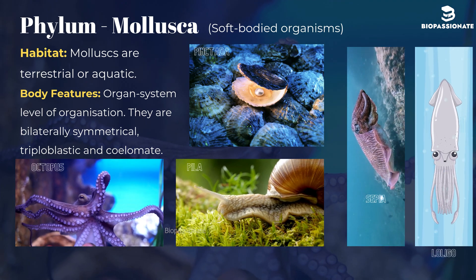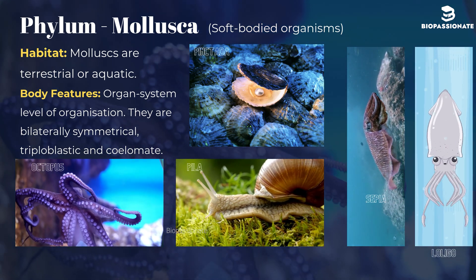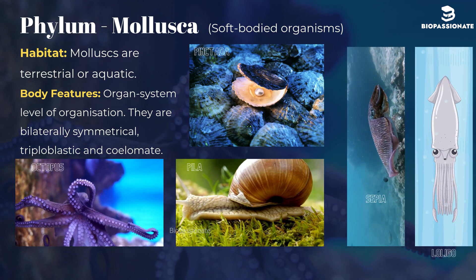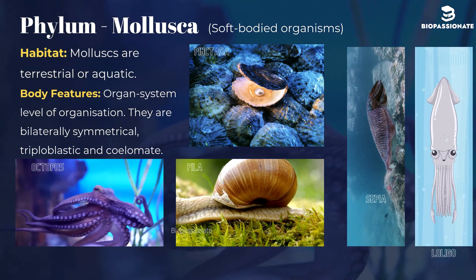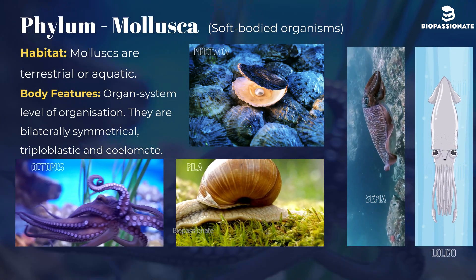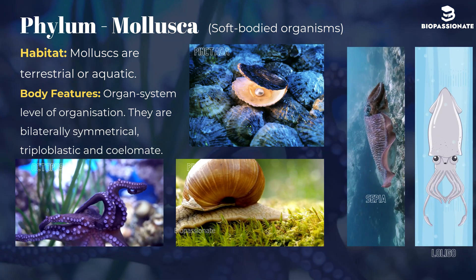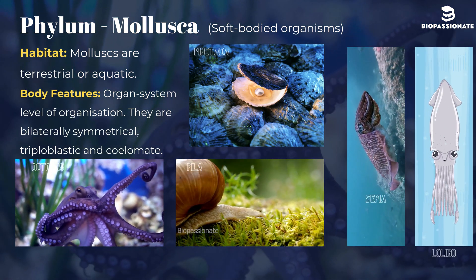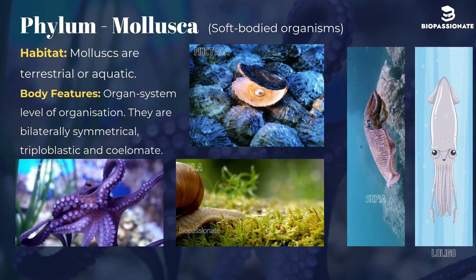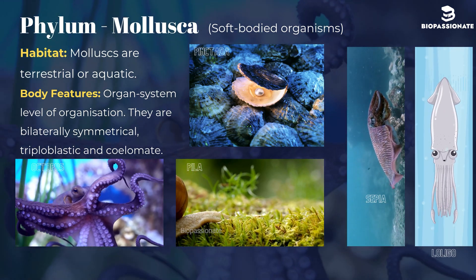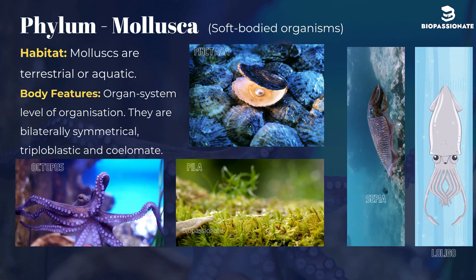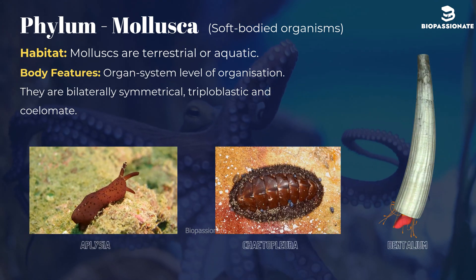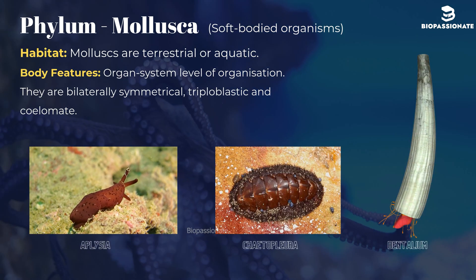Phylum Mollusca. These are soft-bodied organisms. Molluscs are terrestrial and aquatic, with organ system level of organization. They are bilaterally symmetrical, triploblastic, and coelomate. Common examples are Octopus (devilfish), Pila (apple snail), Pinctada (pearl oyster), Sepia (cuttlefish), Loligo (squid), Aplysia (sea hare), Chiton, and Dentalium (tusk shell).